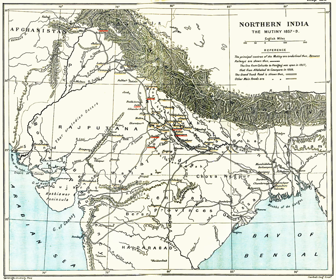India was thereafter administered directly by the British government in the new British Raj. On 1 November 1858, Queen Victoria issued a proclamation to Indians, which while lacking the authority of a constitutional provision, promised rights similar to those of other British subjects. In the following decades, when admission to these rights was not always forthcoming, Indians were to pointedly refer to the Queen's proclamation in growing avowals of a new nationalism.